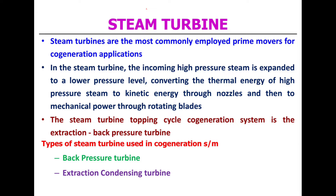According to the steam turbine, steam turbines are the most commonly employed prime movers for cogeneration applications. In the steam turbine, the incoming high pressure steam is expanded to a lower pressure level, converting the thermal energy of high pressure steam to kinetic energy through a nozzle, and then to mechanical power through rotating blades. The steam turbine topping cycle cogeneration system is the extraction backpressure turbine.